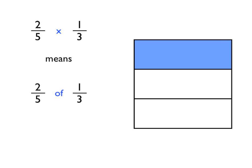2 fifths of 1 third. So if we take our 1 third that you can see there in the square and we split that up into fifths, we'll then want 2 fifths of that 1 third.